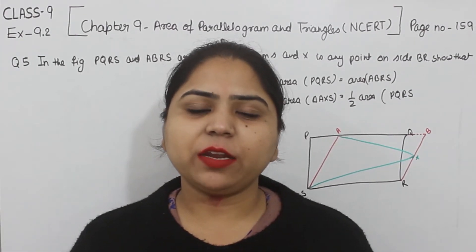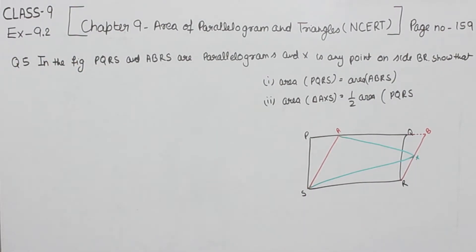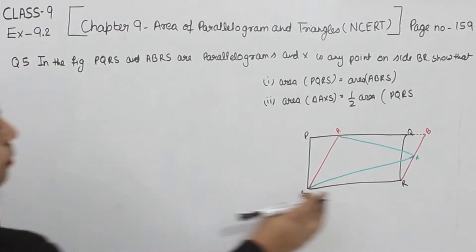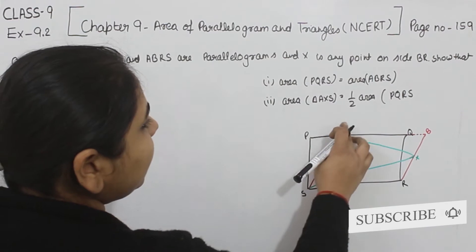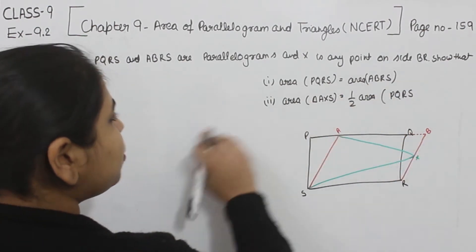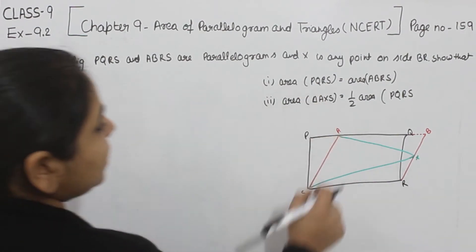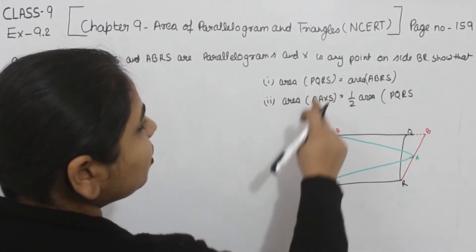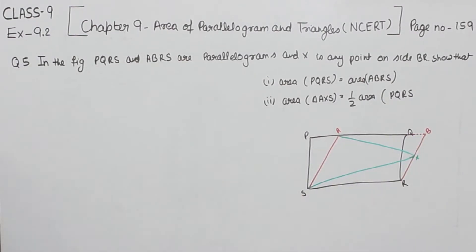Hello everyone, this is Preeti. We are here with another question of Exercise 9.2, page number 159, question number 5. In the figure, PQRS and ABRS are two parallelograms, and X is any point on the side BR. We have to show two things: first, that the area of parallelogram PQRS is equal to the area of parallelogram ABRS.